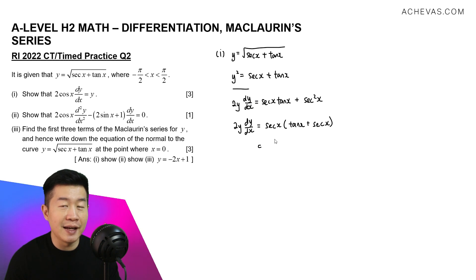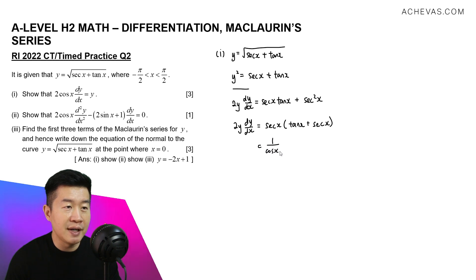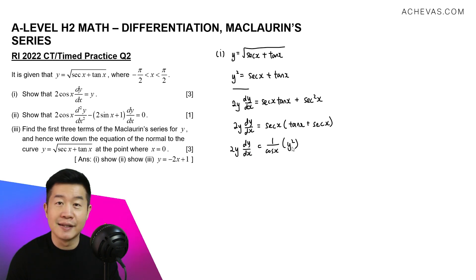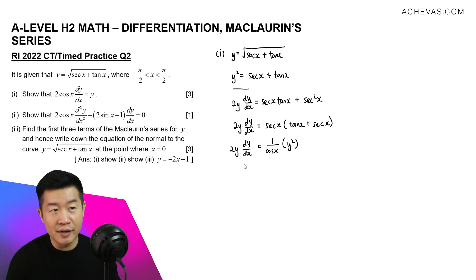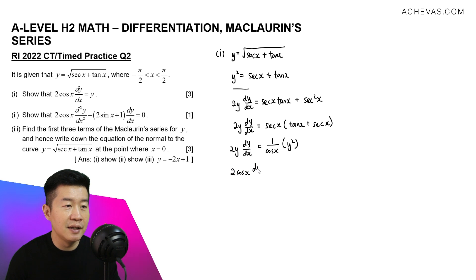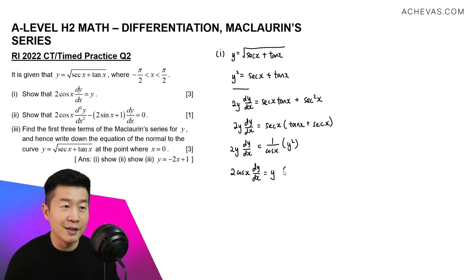Secant x is 1 over cosine x, and here we have y squared. So 2y dy/dx is equal to (1/cos x) · y². Multiplying cosine across and dividing y across, we will now get 2 cosine x · dy/dx is equal to y squared divided by y, which gives y. And this is what we are supposed to show in Part 1.